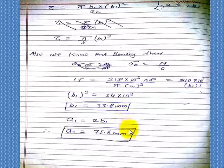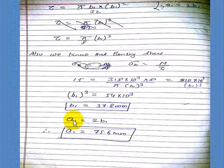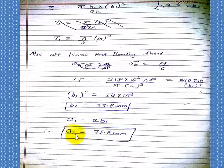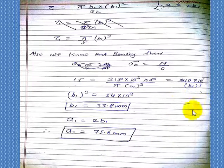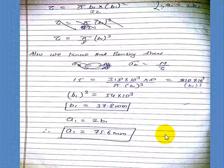And our relation is given, major axis is equal to twice of minor axis. Therefore a1 is equal to 2 b1. So b1 is 37.8 mm, and a1 is 2 into 37.8 mm equal to 75.6 mm. So this is our a1 and b1 calculated, our dimension.